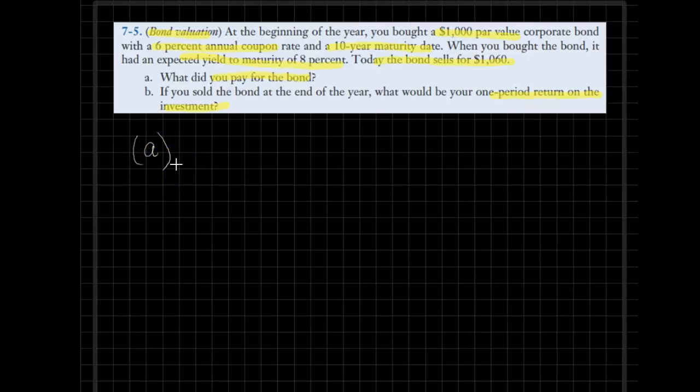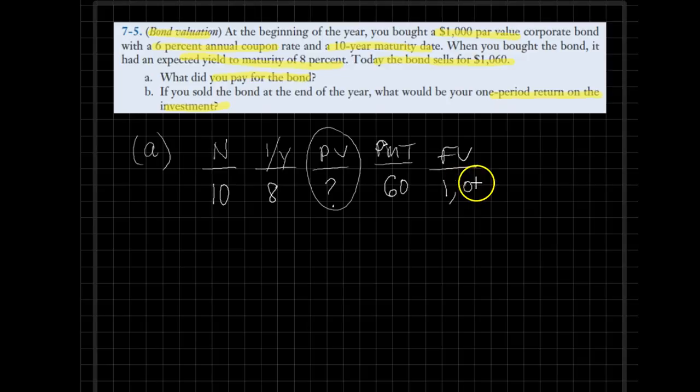Without any delay, I would like to start from the first part of the problem. Number of periods is 10 years, the interest rate is 8%, that's the expected rate of return at the time of purchase, and the purchase price is the question mark. The payments, the coupon payments, are 6% of $1,000 face value, so they should be $60, and the face value is $1,000.